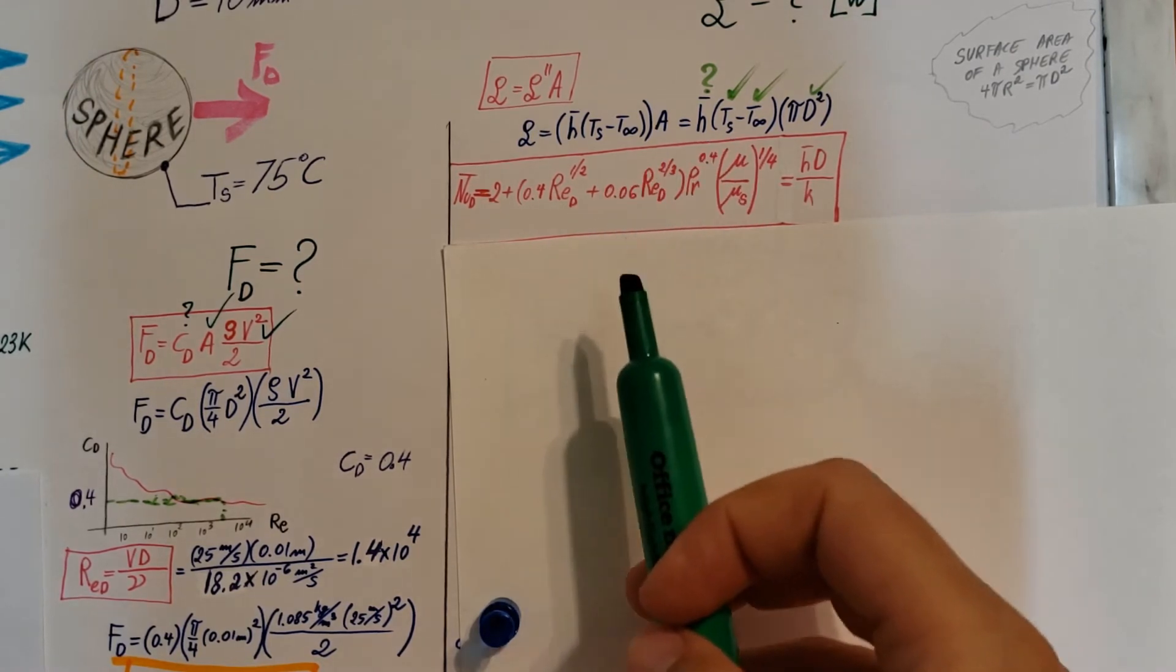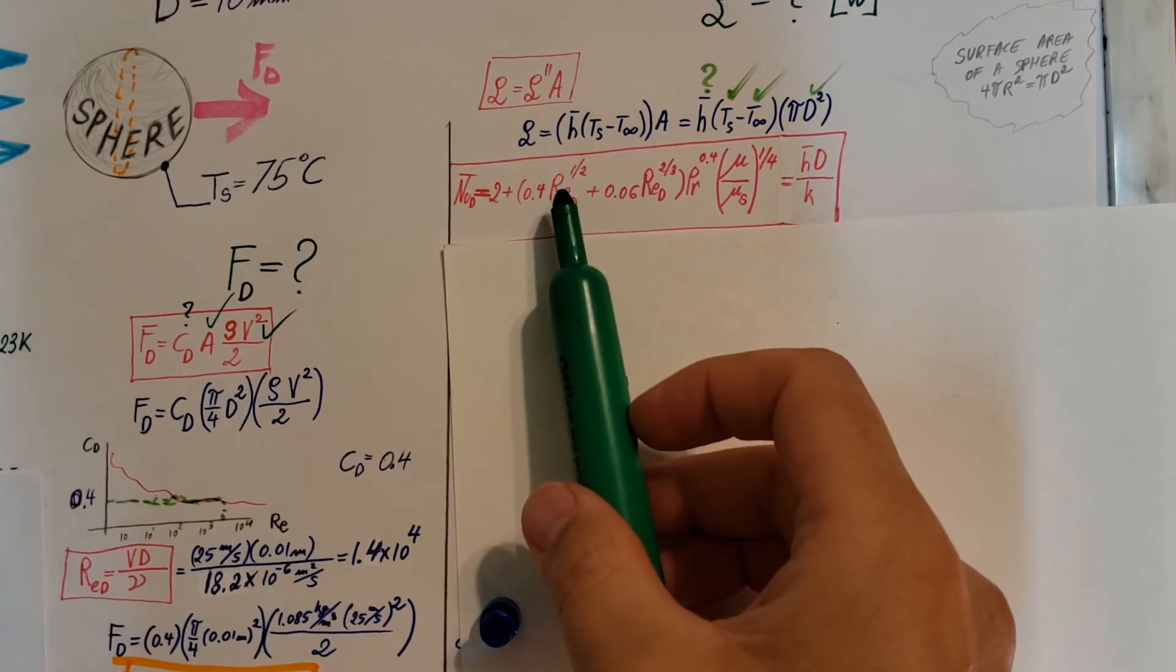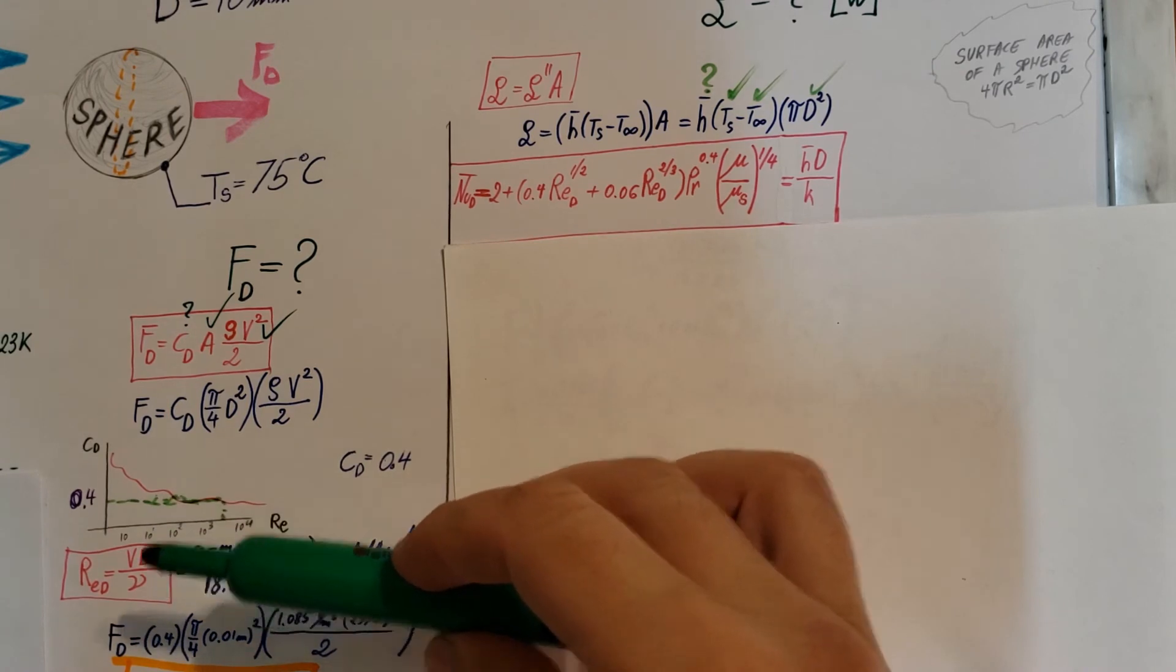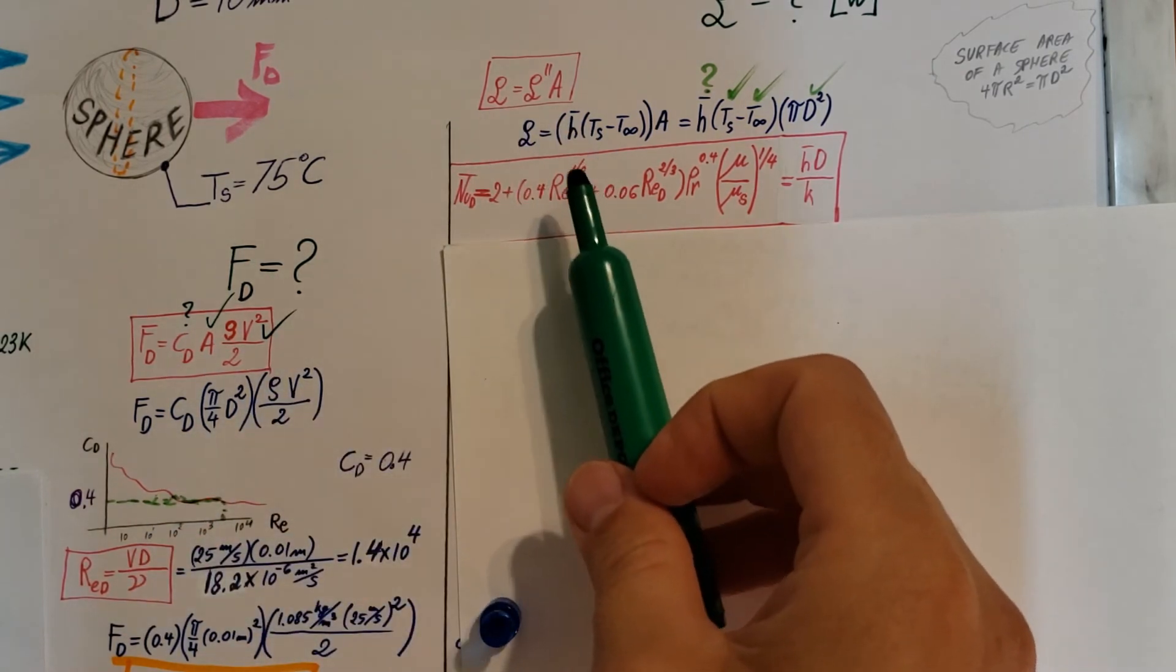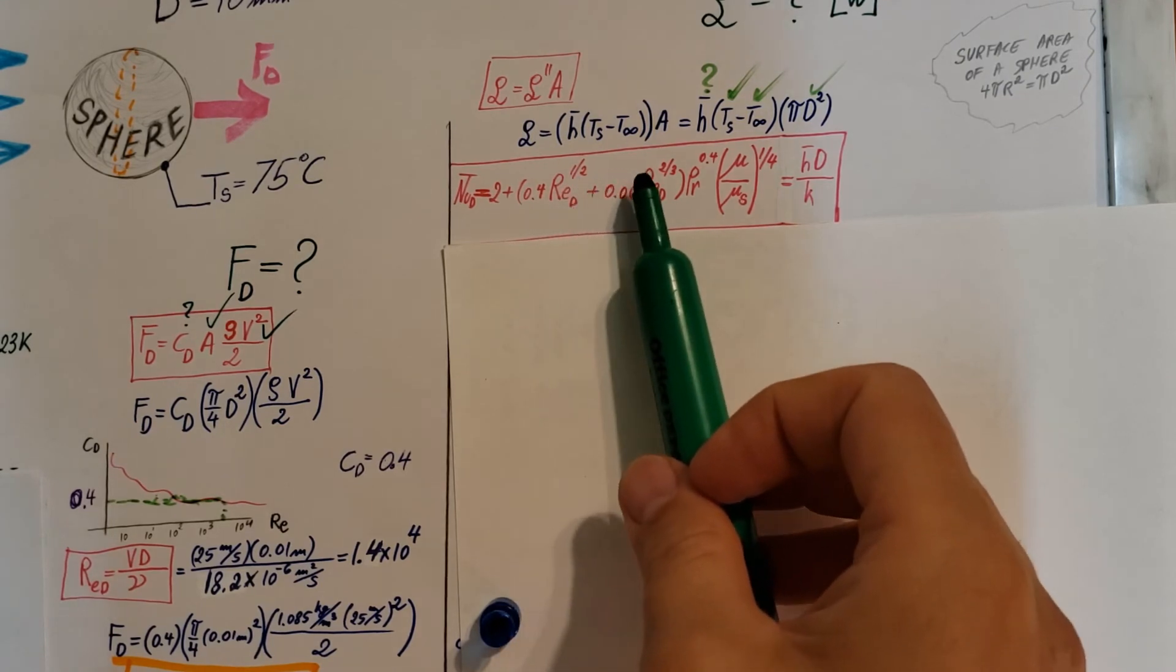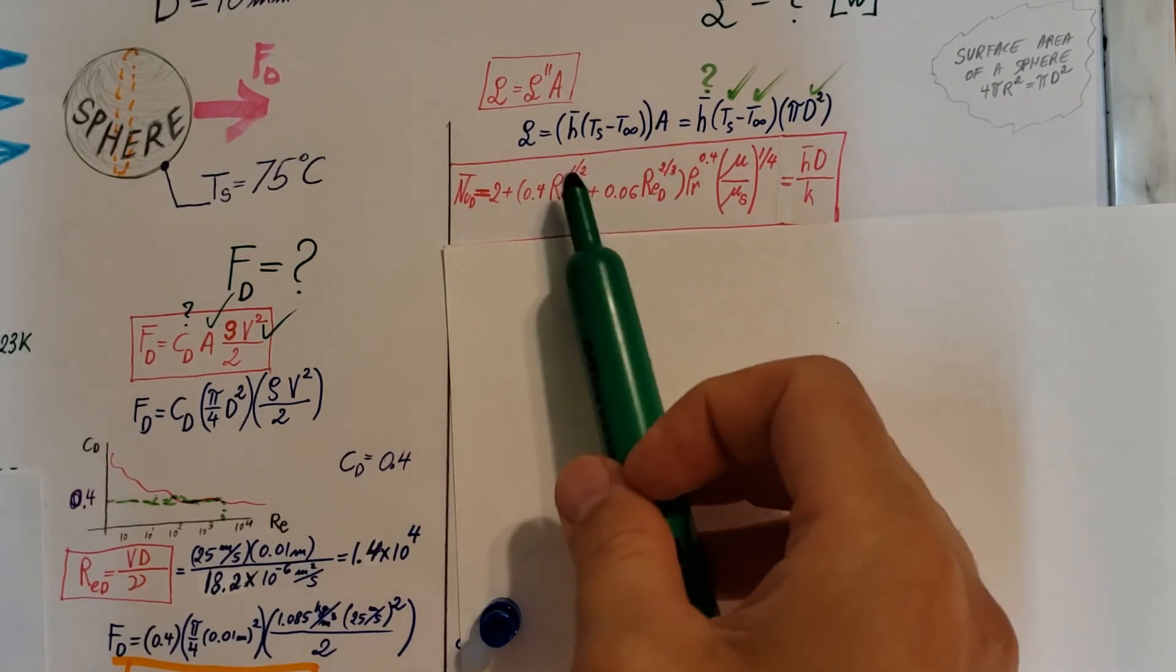So we're going to have to find those. And the Reynolds number again, we're going to have to recalculate it. The one we found here, we found this at film temperature. This formula will rely on T infinity properties, so we're going to have to redo that.